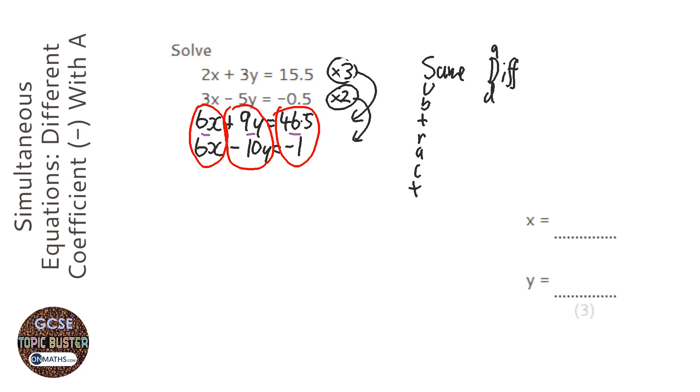So 6x take away 6x is nothing, which is good—we need it to be nothing. 9y minus minus 10y, two minuses make a plus, so that's going to be 19y. And 46.5 minus minus 1 is going to be a plus, so it's going to be 47.5. And here we get into a little bit of difficulties because we're dividing 47.5 by 19.